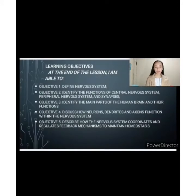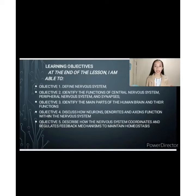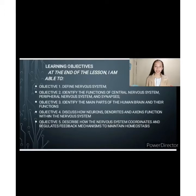These are our learning objectives. At the end of the lesson, I am able to define the nervous system, identify the function of the central nervous system, peripheral nervous system, and synapses. Identify the main parts of the human brain and their functions. Discuss how neurons, dendrites, and axons function within the nervous system. And lastly, describe how the nervous system coordinates and regulates feedback mechanisms to maintain homeostasis.